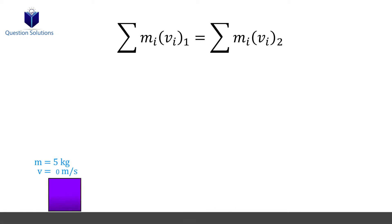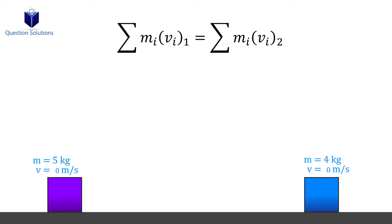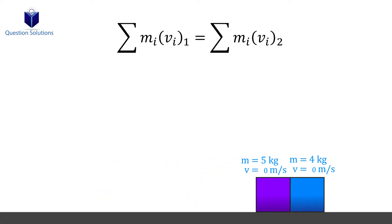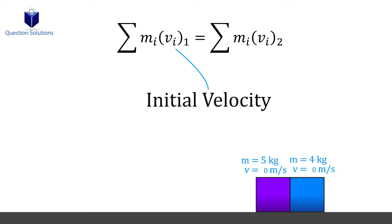Imagine there are two boxes and they impact each other. We can use the conservation of linear momentum to figure out their velocities right after impact if we know the initial velocity and the mass of the boxes.